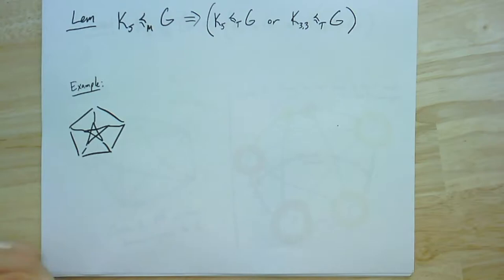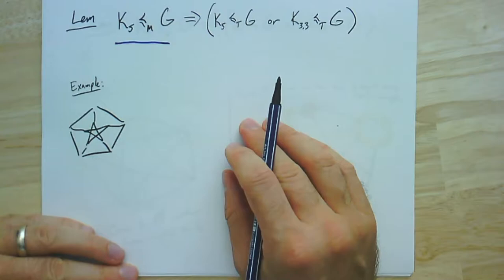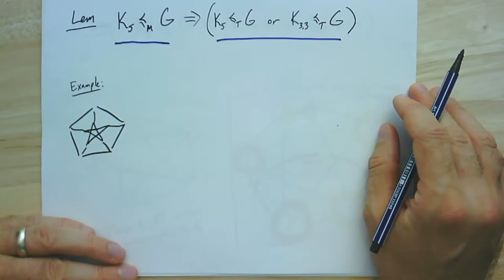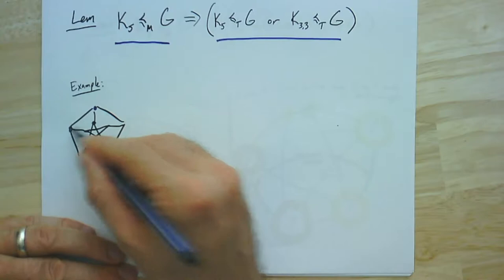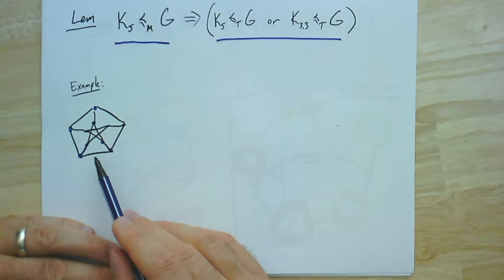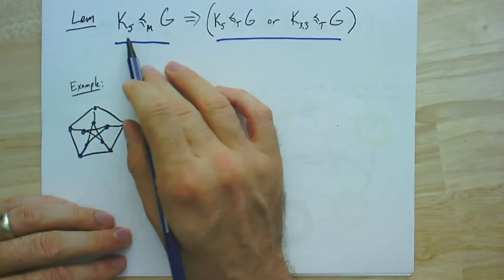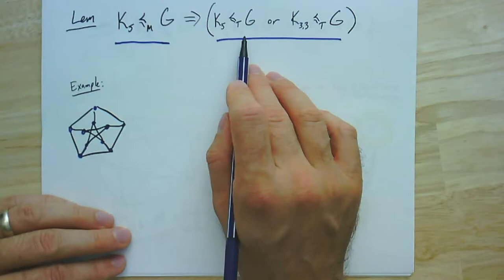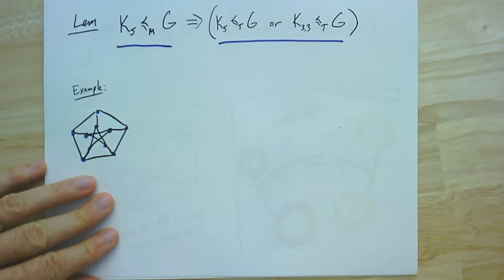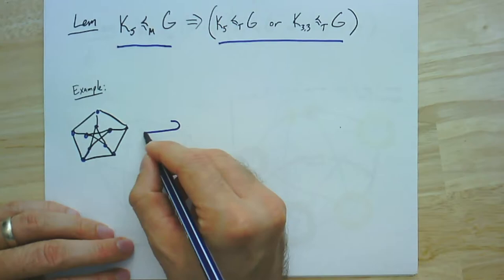We start with this lemma: if you have a K5 minor, then you have at least one of these two topological minors. You might not have a K5 topological minor — we've done examples with the Petersen graph. The Petersen graph has a K5 minor but not a K5 topological minor, which we saw by thinking about the degrees. But if it doesn't have a K5 topological minor, then it does have a K3,3 topological minor.